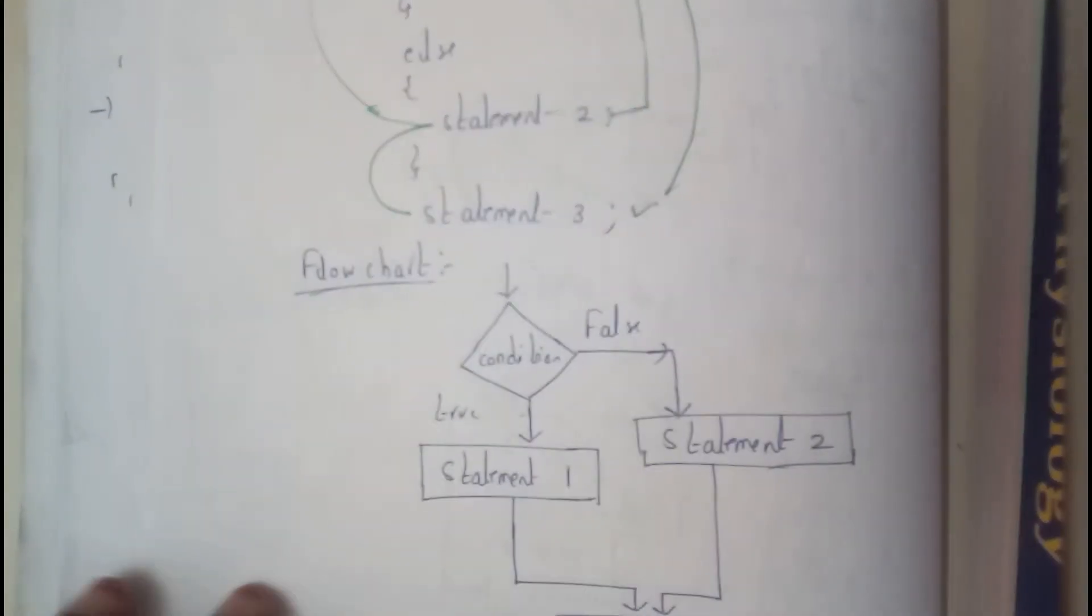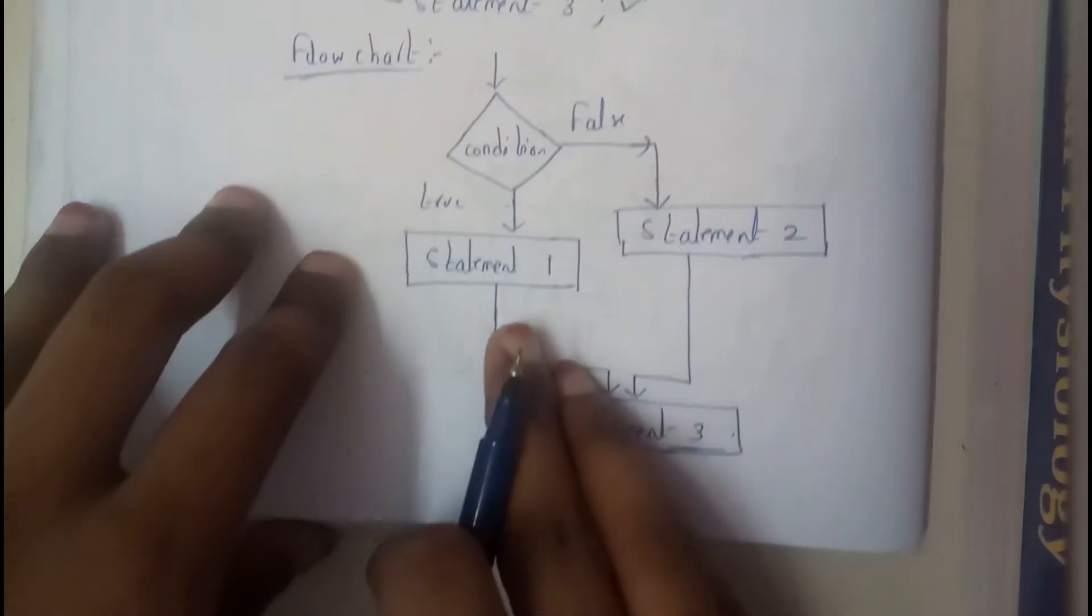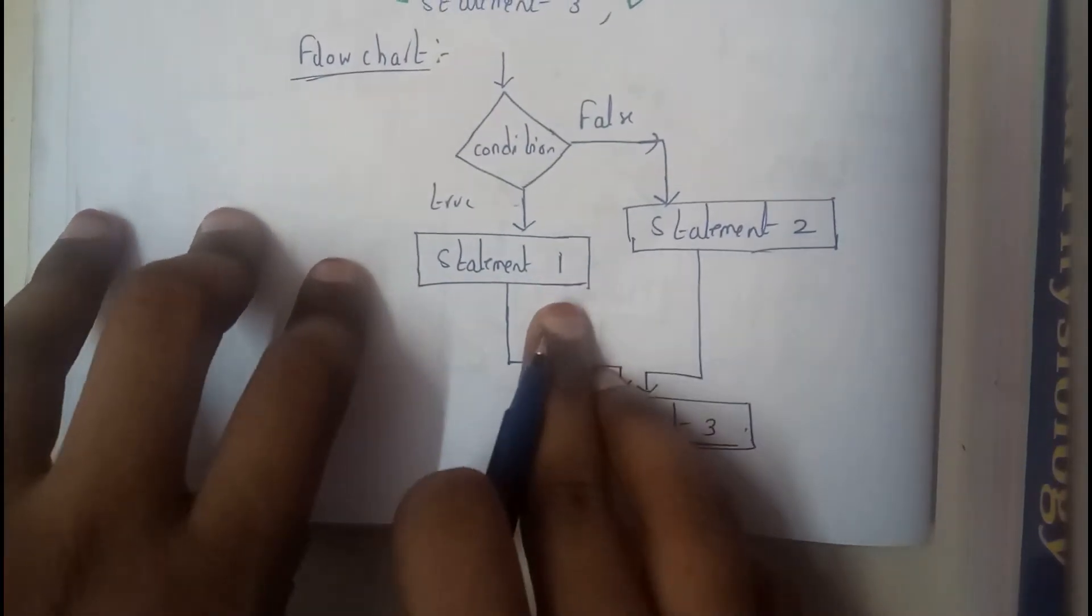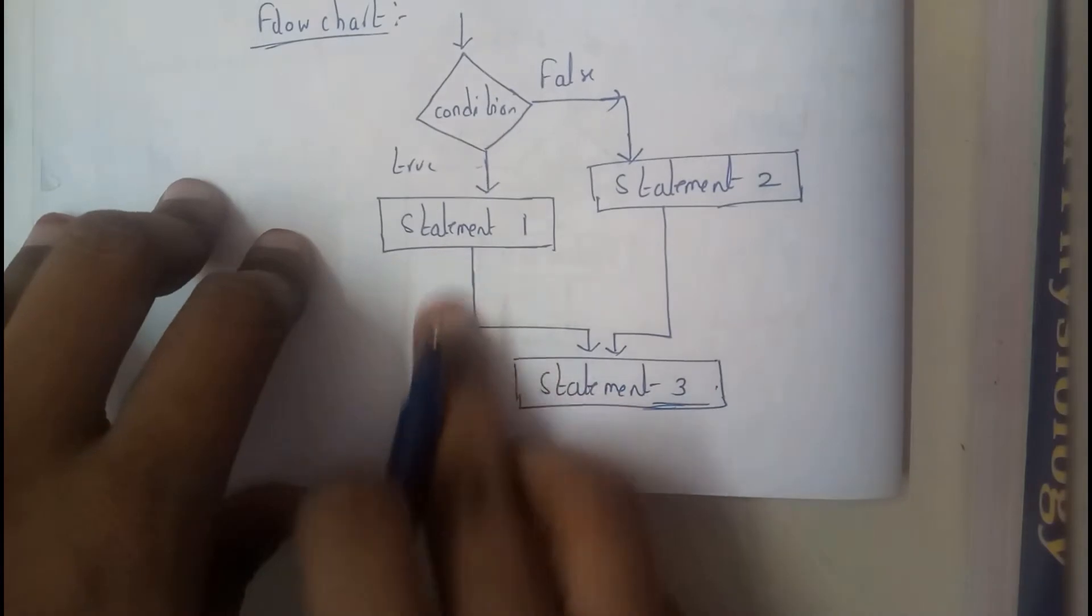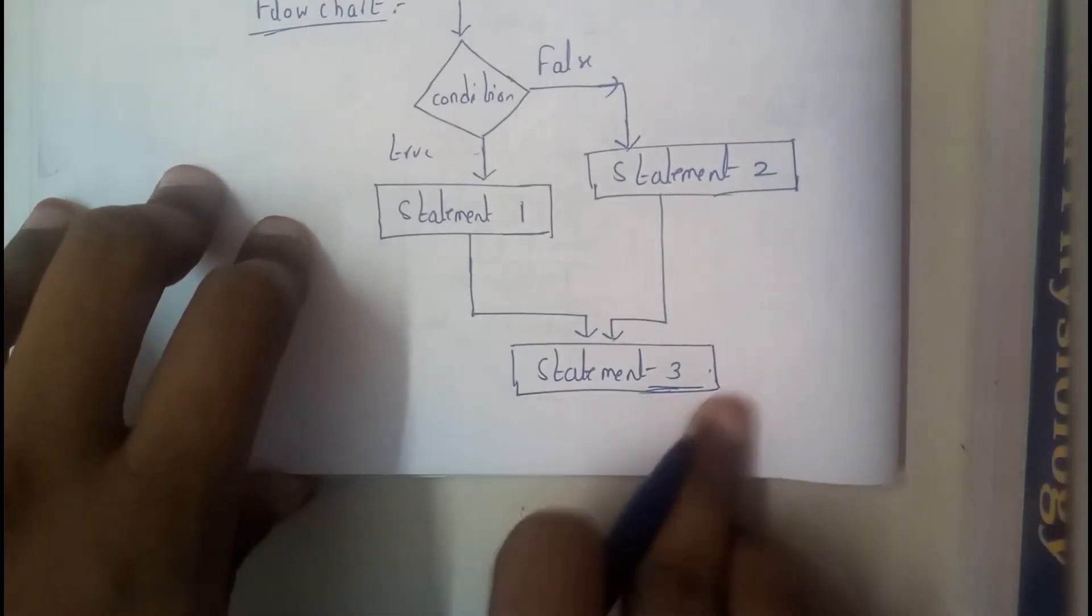Once we go through the flow, you will be understanding. Initially we will be checking the condition. If it is true, statement 1 will be executed. If it is false, statement 2 will be executed, and it continues finally to statement 3.